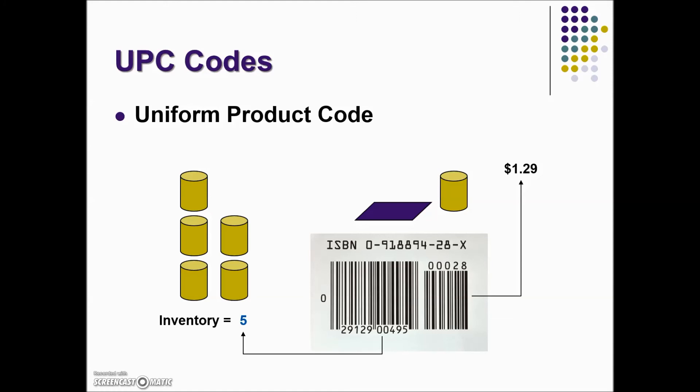One of the first techniques, and one that is still used today, is the Universal Product Code (UPC). This technique requires a tag with black stripes called a barcode to be imprinted on each item in inventory. The tag can be scanned at cash registers or other readers. A disadvantage of the UPC technique is the requirement that it be scanned with light rays, so the UPC code has to be visible and directed toward the machine reading the code.